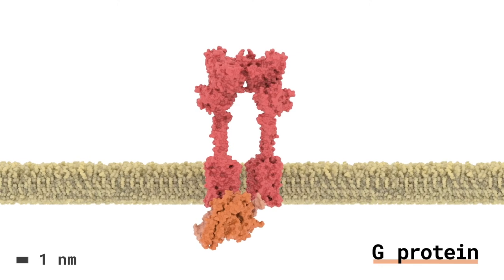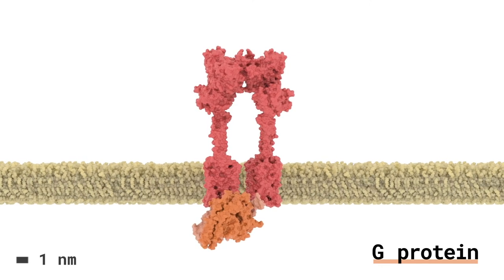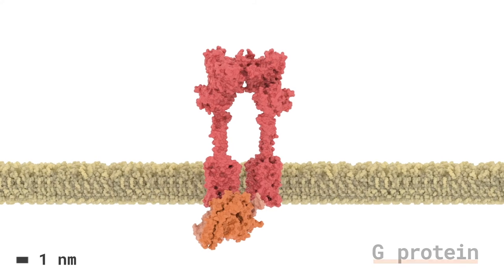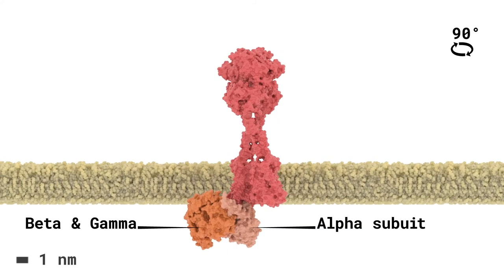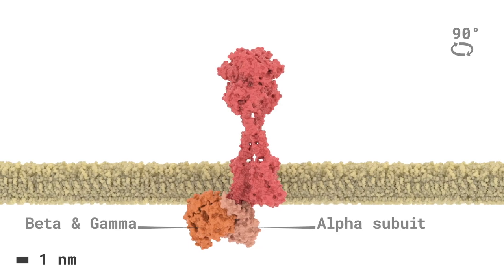Yanagawa et al. observed that metabotropic glutamate receptor-free, pre-coupled with G-proteins, will diffuse rapidly across the membrane, exhibiting either Brownian or directed motion.